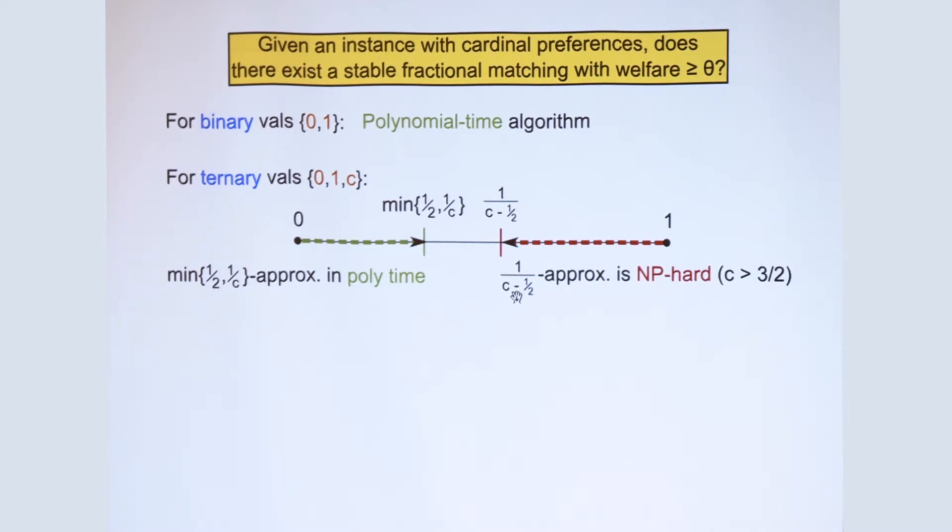So for example, if C is equal to 3, meaning the valuations can be 0, 1, or 3, then you can get 33% in polytime, but doing anything better than 40% is hard.